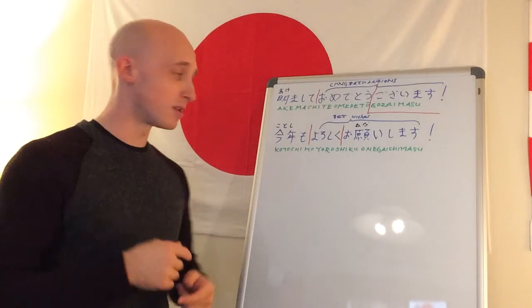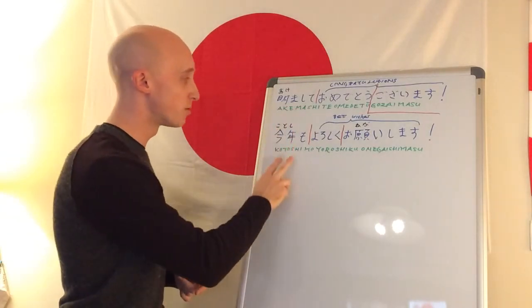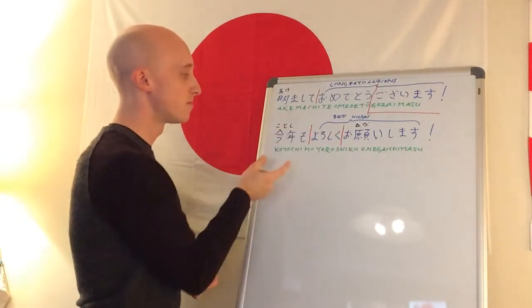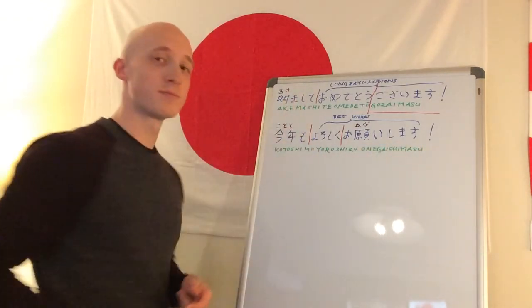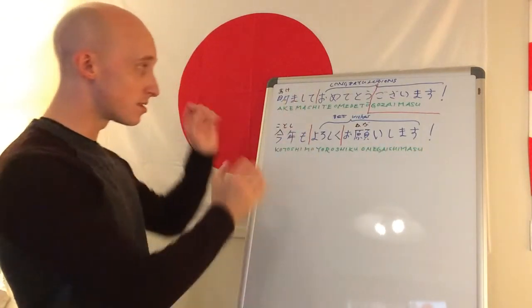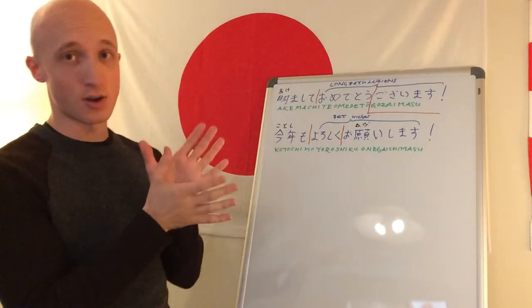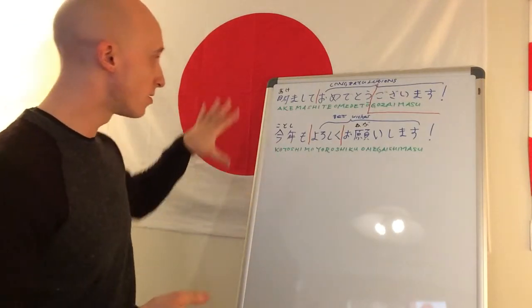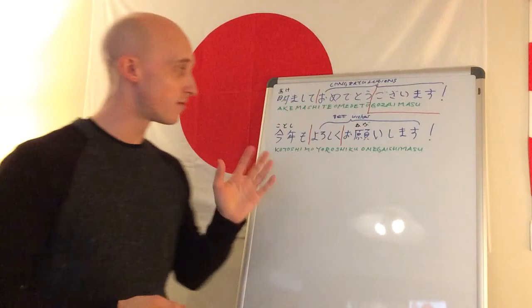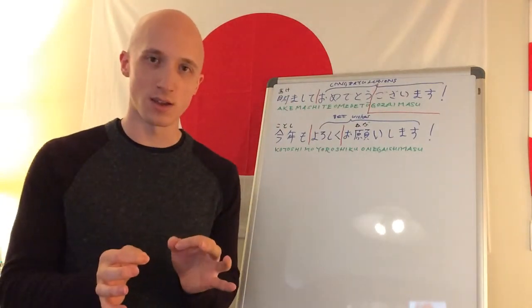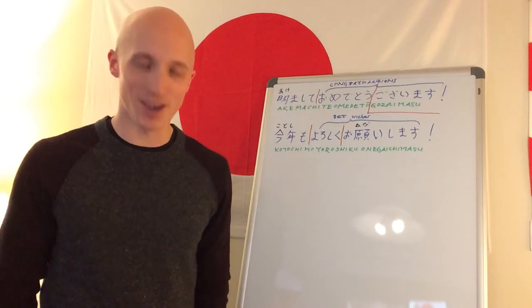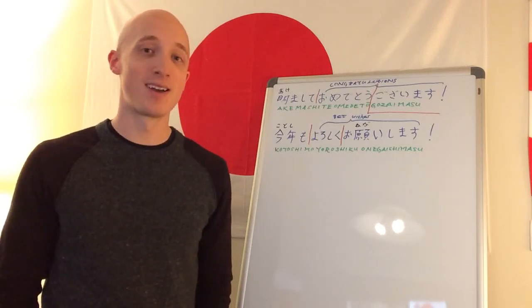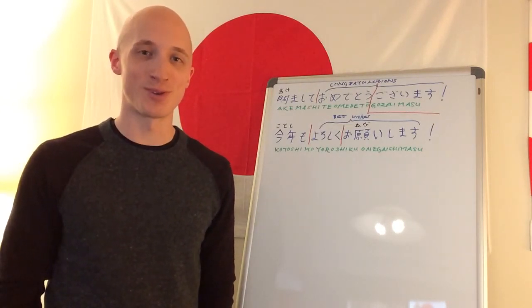So now you should probably have a good idea what this all means. Kotoshi mo yoroshiku onegaishimasu. This year too, this year also, best wishes. So that is the whole way to say happy new year on its own. And now we've gone through all the syllables, backwards and forwards. Let's see if we can say it all together again. So repeat after me. Akemashite omedetou gozaimasu. Kotoshi mo yoroshiku onegaishimasu. Were you able to do it?